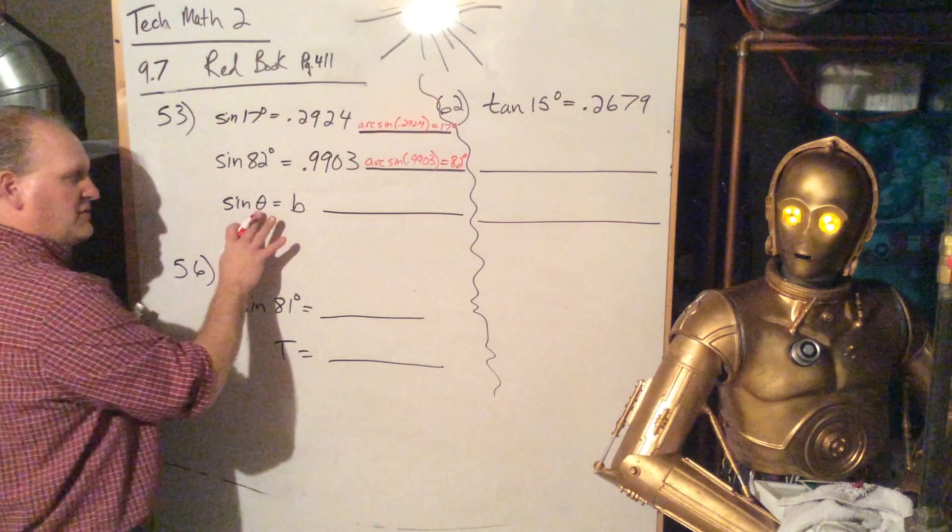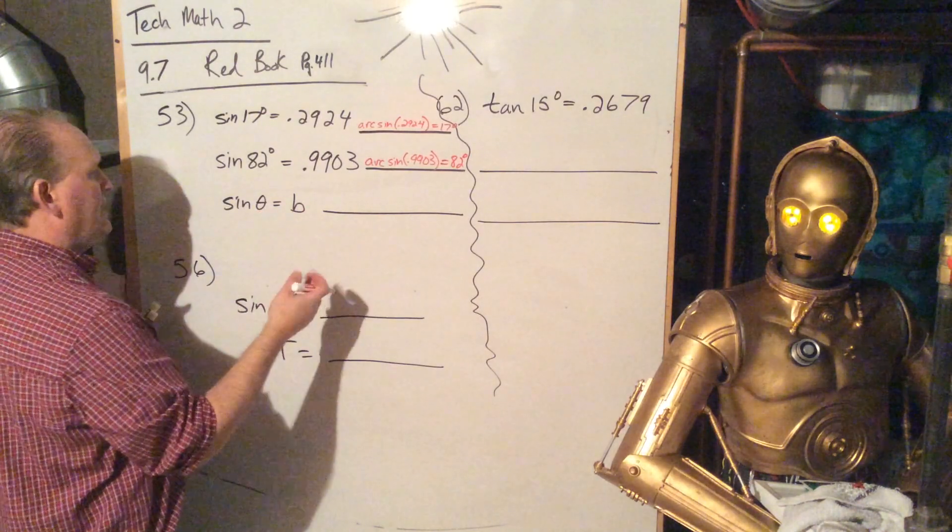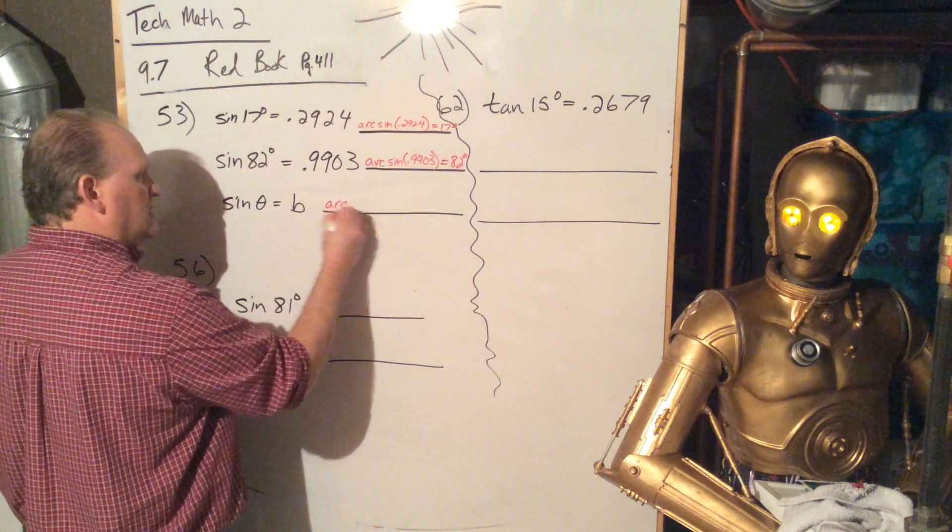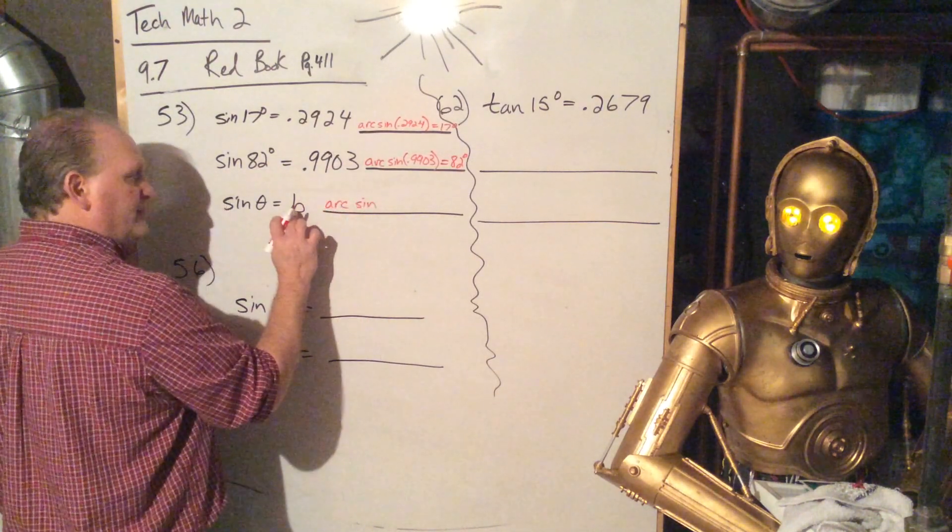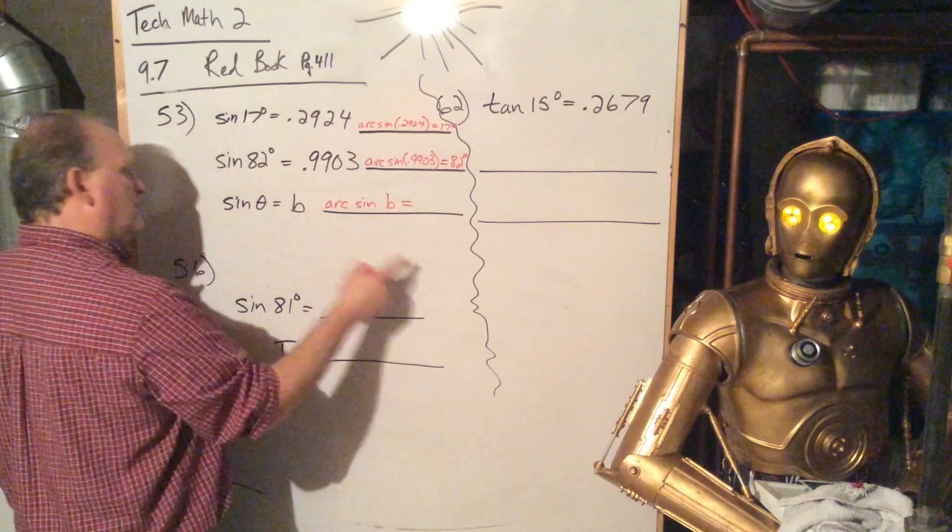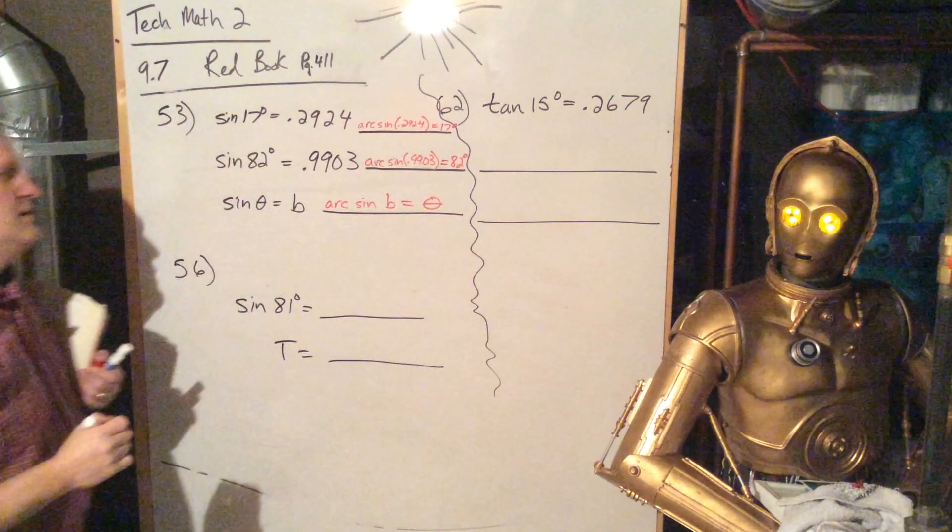And now here they went all abstract on us, so just use theta in B. So we're going to say, okay, the arc sine of B, like the answer, is going to equal whatever the angle is, theta.